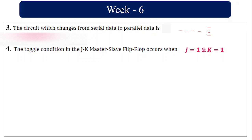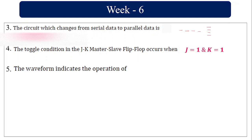The toggle condition in a JK master-slave flip-flop occurs when J equal to 1 and K equal to 1, as we just saw.